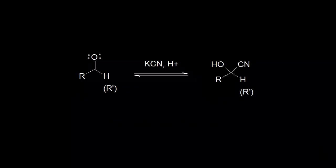We've seen a lot of nucleophilic addition reactions to aldehydes and ketones, and in this video we're going to look at the addition of carbon nucleophiles. If I started with an aldehyde or ketone and I add something like potassium cyanide and a source of protons, I'm going to form a cyanohydrin. Notice we're forming a carbon-carbon bond, so that can be useful for synthesis reactions.